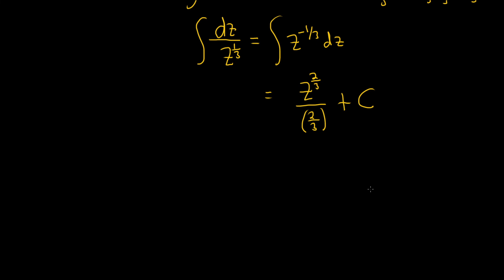So when we divide by 2 thirds, we really multiply by the reciprocal, right? Division is multiplication by the reciprocal. So this is really 3 halves times z to the 2 thirds. Let's not forget our capital C. And that would be the final answer. I hope this video has been helpful.